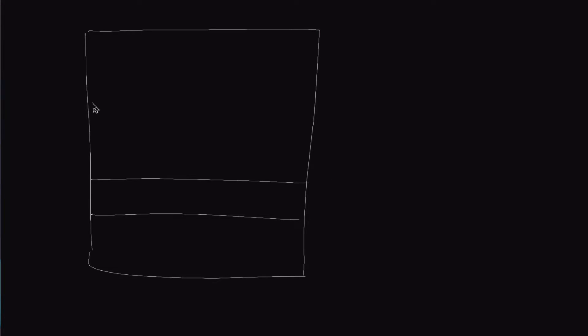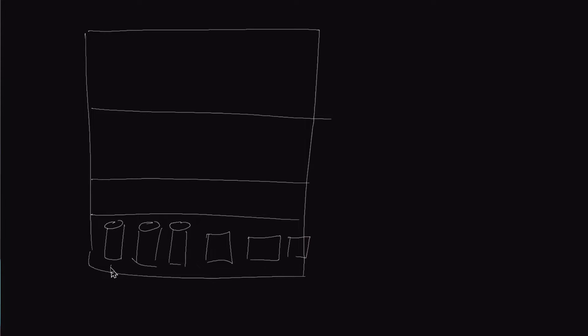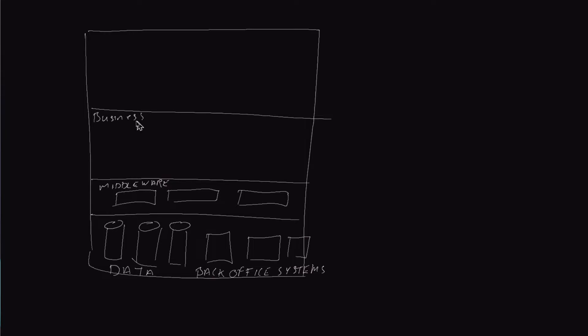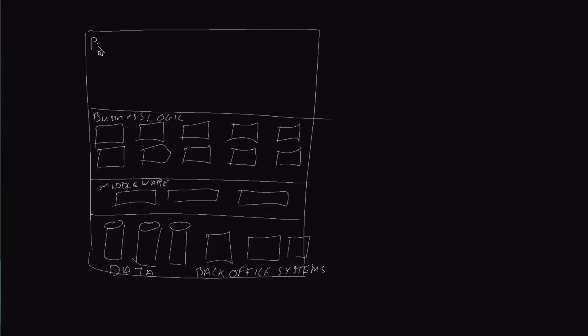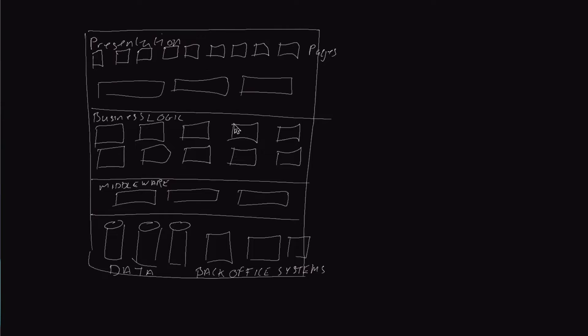In my past I've worked with many different types of architectures, and all of them always have one theme in common: separating areas of concern — dividing things up, separating them out so they're easy to develop, easy to manage, and easy to deploy. But previously, all of these architectures and developments always ended up back in the same place — and that's a monolith.